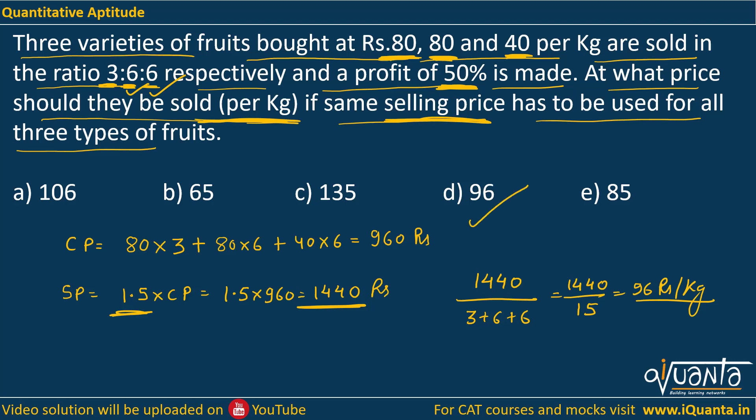So 96 rupees per kg should be the selling price for all types of fruits. I hope this is understood — option D is the correct answer. If there is any doubt, please comment. If you want questions on a specific topic, let us know in the comments. If you want us to continue this series of LRDI and quant questions, please hit like and subscribe to the iQuanta YouTube channel. Thank you for listening!